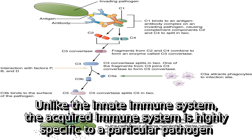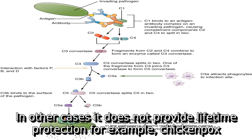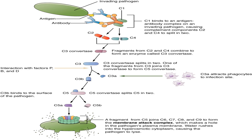Unlike the innate immune system, the acquired immune system is highly specific to a particular pathogen. Acquired immunity can also provide long-lasting protection. For example, someone who recovers from measles is now protected against measles for their lifetime. In other cases, it does not provide lifetime protection, for example, chickenpox.